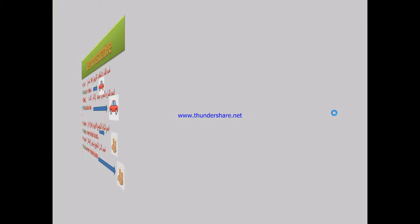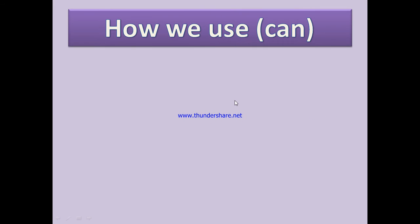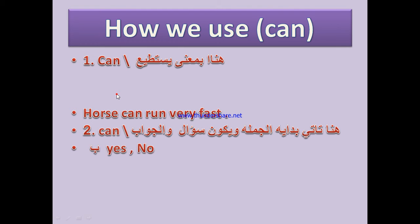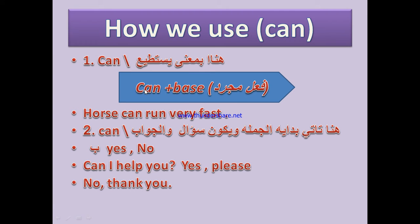Now we go to how we use 'can' — كيف نستخدم can. Can means يستطيع — it is a modal verb. The rule: Can + base verb (فعل مجرد). Always after 'can' we use a bare base verb — a verb with no additions like -ed, -ing, or third person -s. For example: Horse can run very fast. Here 'can' plus 'run' — the verb is in its base form.